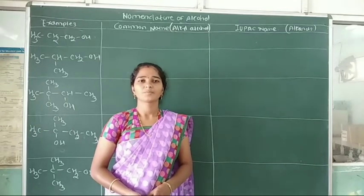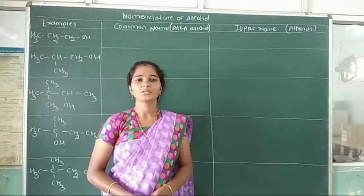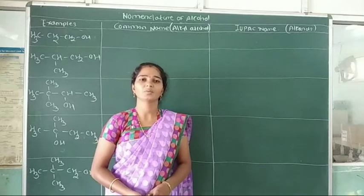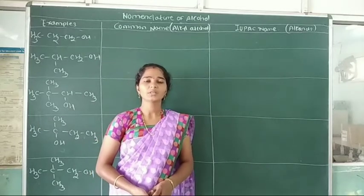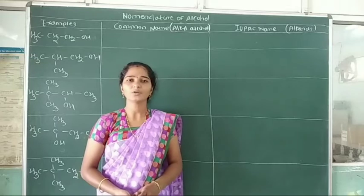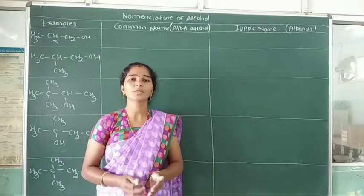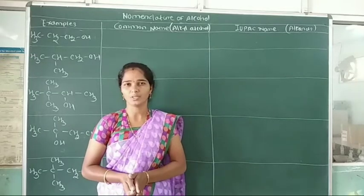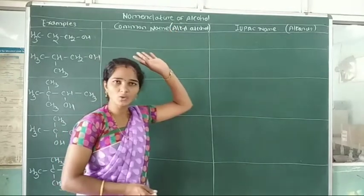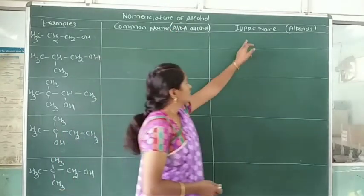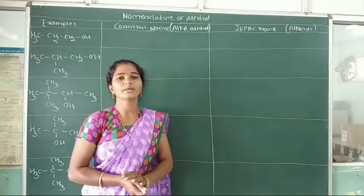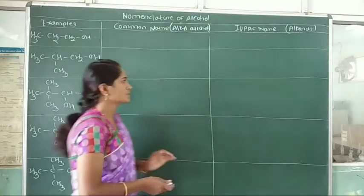Good morning students. In previous lectures we studied about the common system and IUPAC system of alcohols. Today's lecture we will see some examples of alcoholic compounds with their common name and IUPAC name. In the common system, this alcohol is called as alkyl alcohol. In the IUPAC system, this alcohol is called as alkan-ol.